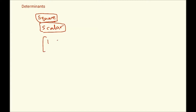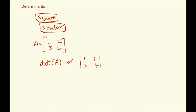For instance, if we look at this matrix, let's call it A. We say that the determinant of A is written as det(A), or using straight lines — notice the straight lines, not brackets — as |1, 2, 3, 4|. The determinant is calculated and turns out to be minus 2. So we take a matrix, calculate its determinant, and the result is a single scalar value.